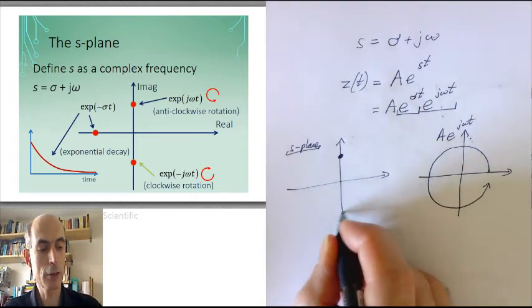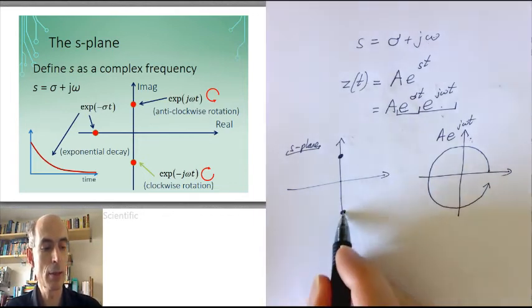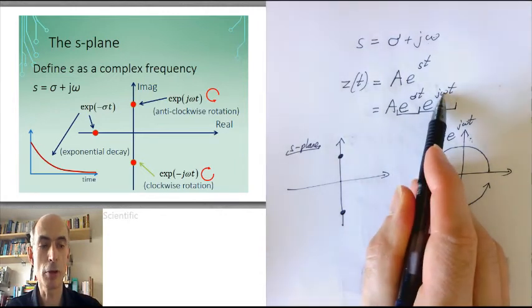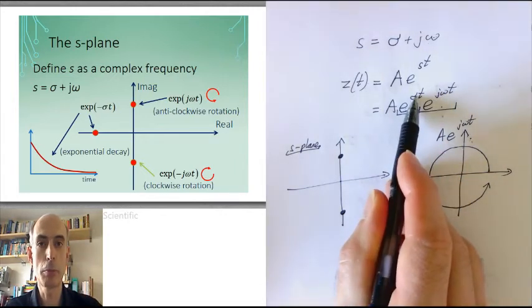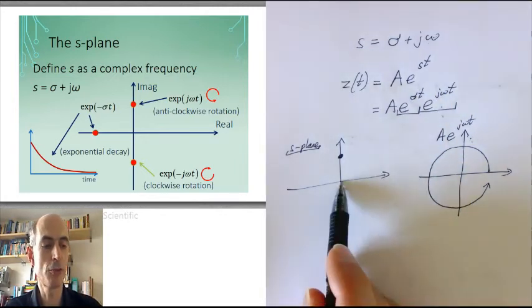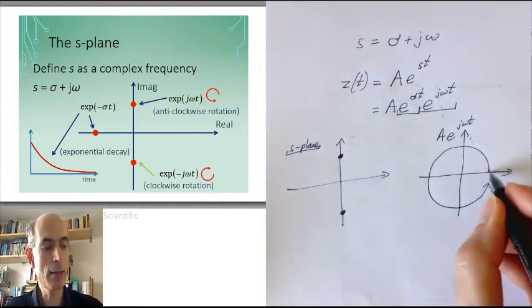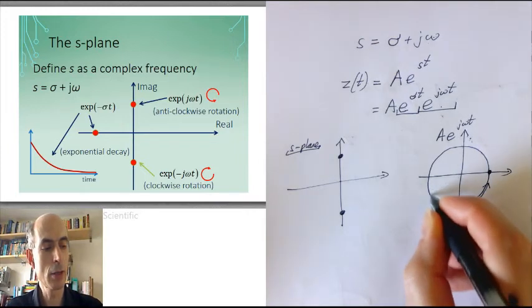A complex frequency down here would have a negative imaginary part, but still sigma would be zero because the real component is zero. So that would be a negative frequency oscillation. It would just be going round clockwise.